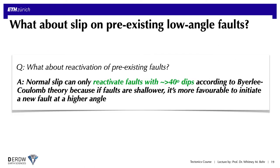To summarize that point, our theory generally indicates that extensional slip can only reactivate faults with dips greater than or equal to about 40 degrees. So we can't use this theory to very effectively explain how we get extensional slip on these very low angle structures. This is what's known as the detachment fault paradox, and it's led to lots of disagreements and discussion in the tectonics literature.